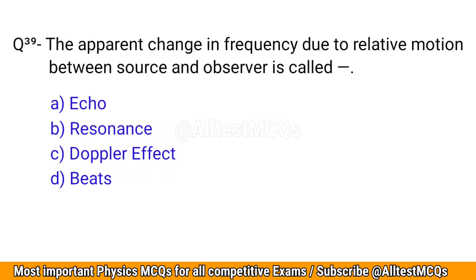Q39. The apparent change in frequency due to relative motion between source and observer is called? The correct option is C: Doppler effect.